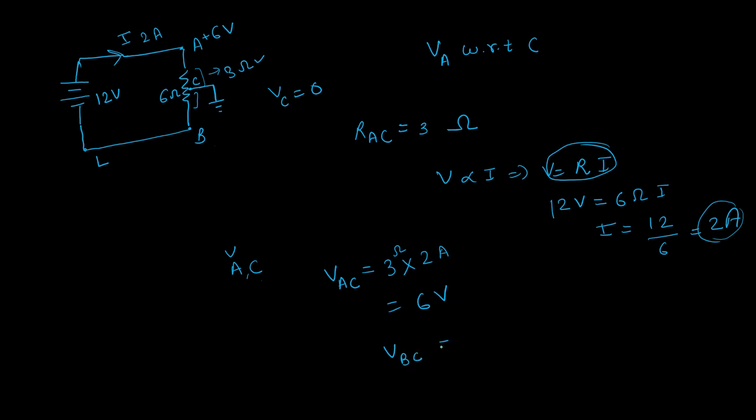VBC. How much is your resistance? 3 Ohm. Current is not going anywhere, so this is 2 Ampere. This is equal to 6 volts. But since it is on the other side, it has to be negative, so it has to be minus 6 volts.